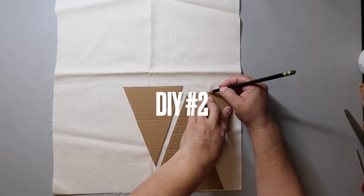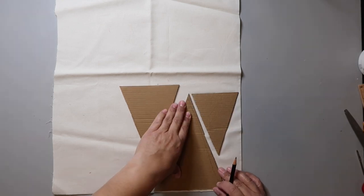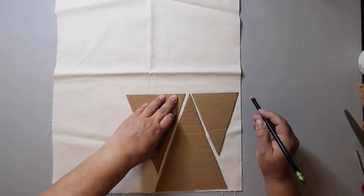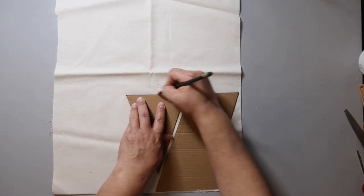For DIY number two, I'm using this linen kind of fabric. I'm using these triangle shapes that I cut out of cardboard as my templates, and I'm just using a pencil to trace the shapes, and then I cut it out.